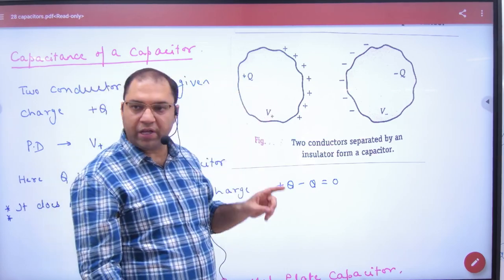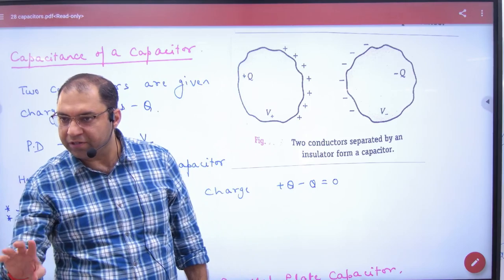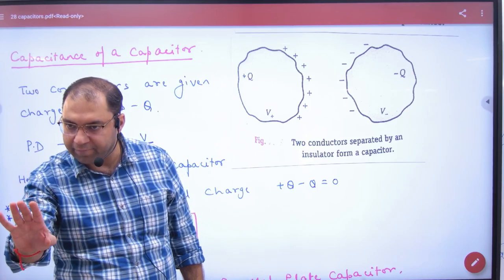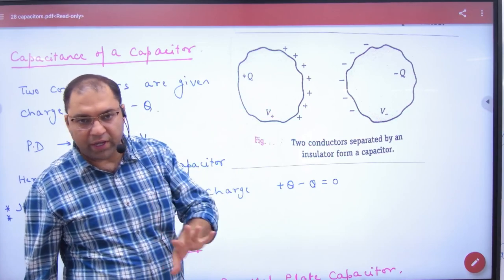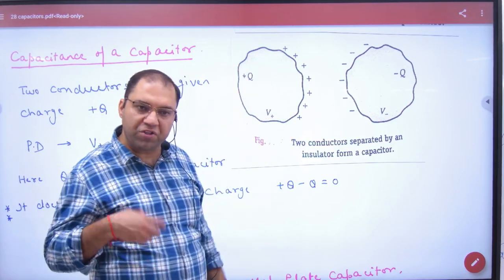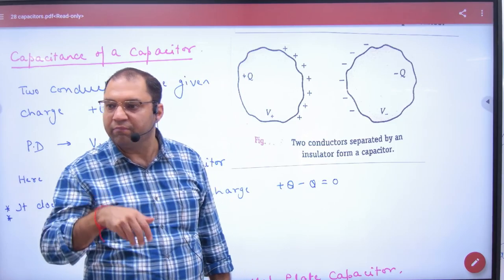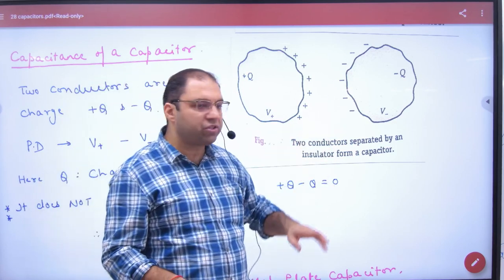But the charge stored in a capacitor, why do you make it here? Minus Q is not just Q, clear. So Q charge, now Q charge is positive charge. In this body positive potential will develop because positive charge develops positive potential and negative charge develops negative potential.